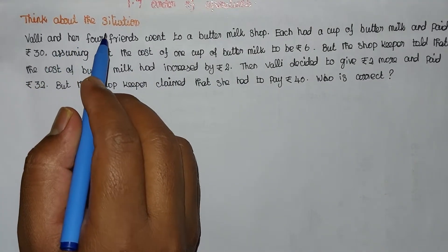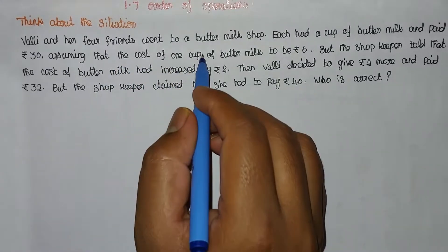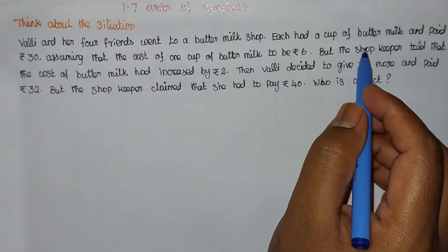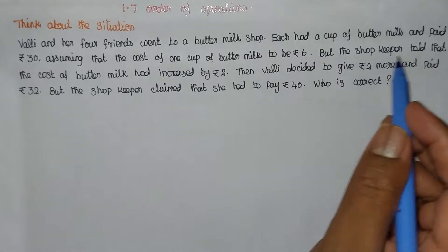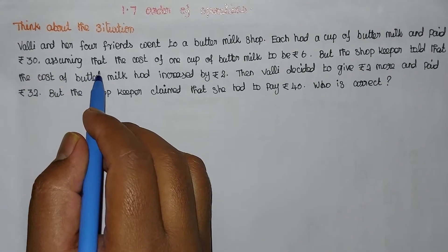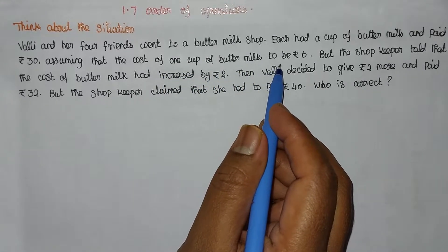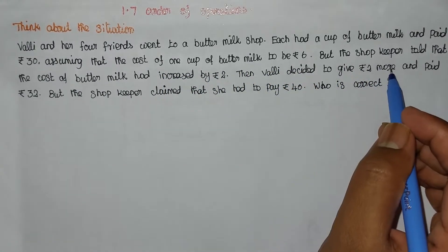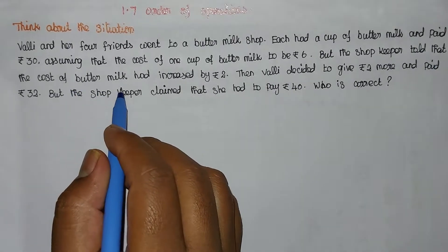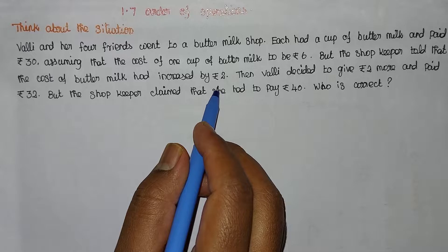Let's think about the situation. Wally and her four friends went to a buttermilk shop. Each had a cup of buttermilk and paid 30 rupees. Assuming that the cost of one cup of buttermilk is 6 rupees. But the shopkeeper told that the cost of buttermilk had increased by 2 rupees.